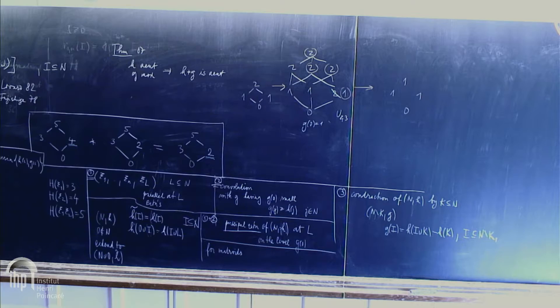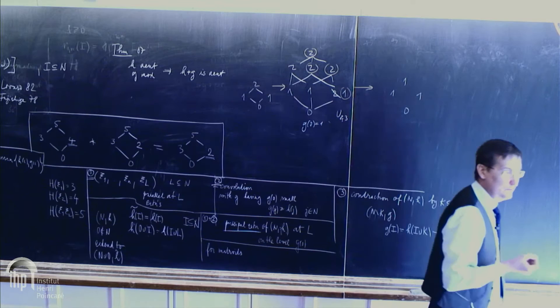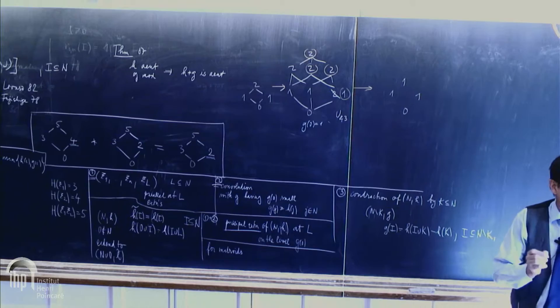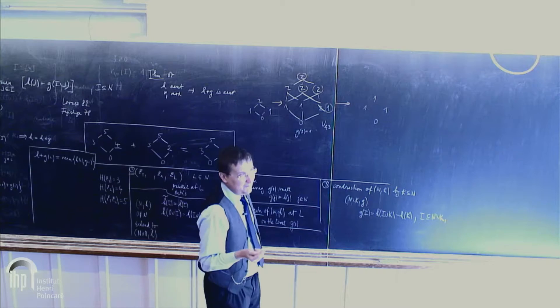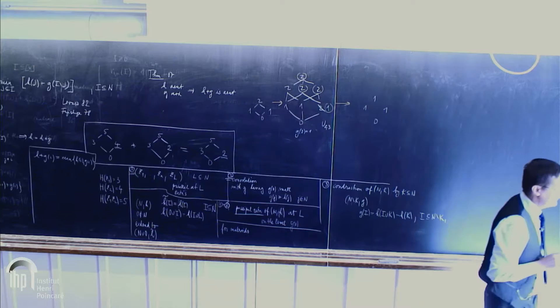So in particular, linear matroids over infinite fields are close to principal extensions. But if the field is finite, then not. Why not? Because I did from this U to three. And if I do it once again, then I get U to four and U to five. So if the field is small, it's not close to principal extensions. There's a different class of matroids.